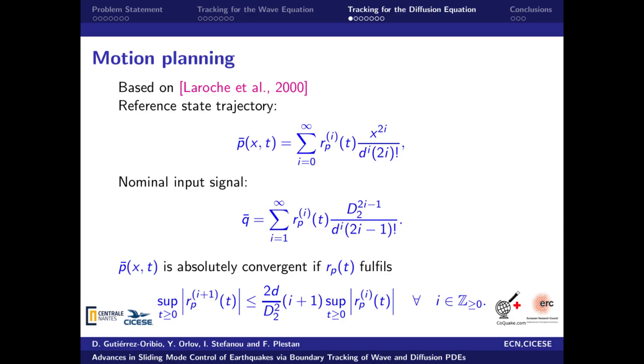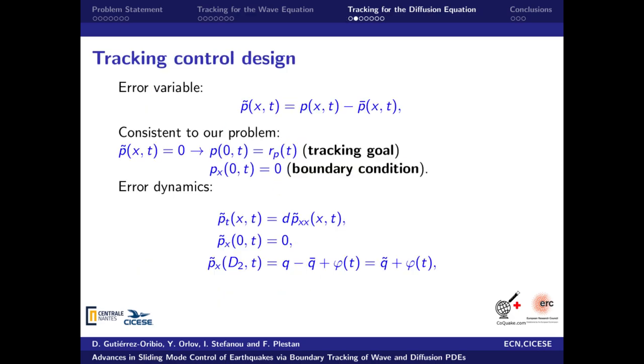Now we need to generate such pressure from the flux input of the well. We will start with the motion planning of the diffusion equation then. Following the work of Laroche et al. 2000, the reference profile and the nominal control can be obtained from the reference RP as shown in the slide. Such an approach is successful if the reference and all its derivatives fulfill a bound condition.